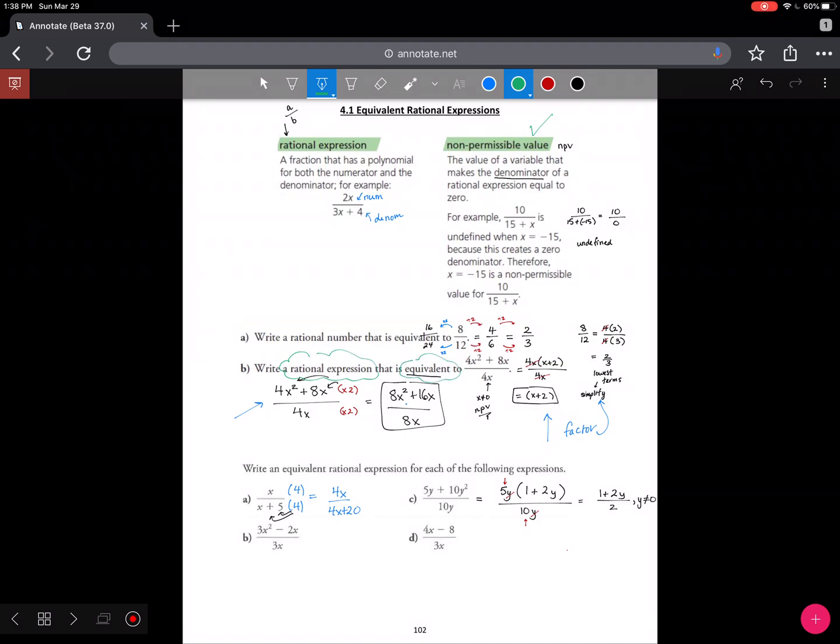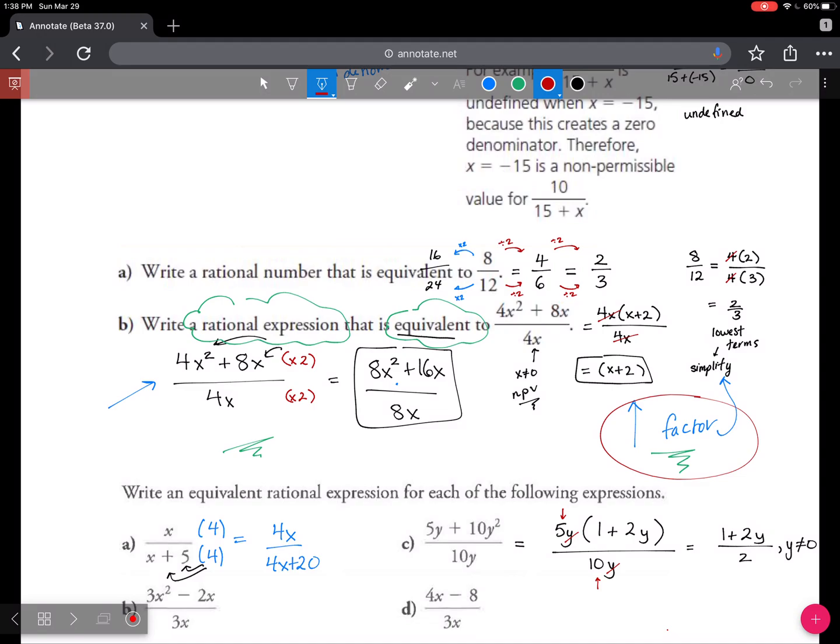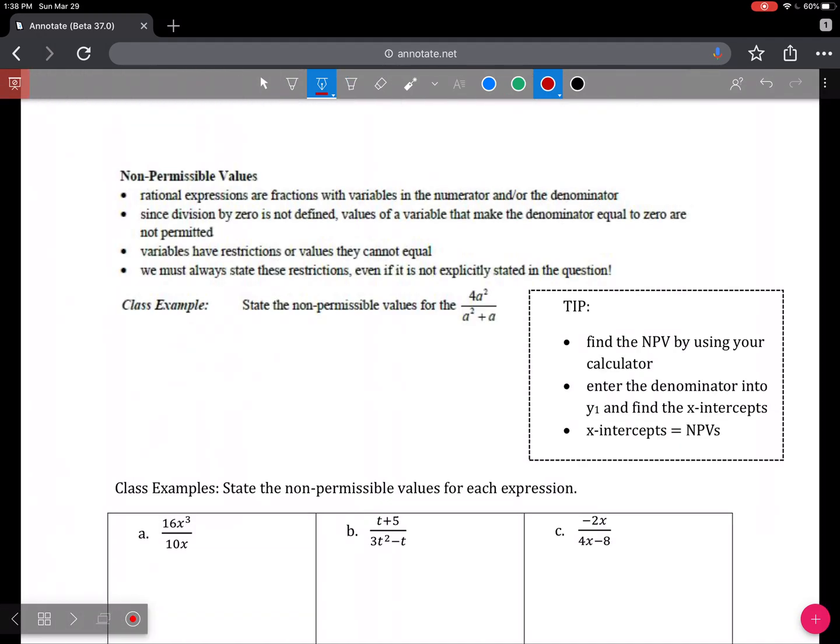Two processes where we can factor and simplify or just multiply top and bottom by the same number. As we progress through the unit, it's going to be the factoring and the simplifying that we focus on. Let's talk a little bit more about non-permissible values. Remember that division by 0 is what is not defined. We only care about what the denominator is in the sense that the denominator is not allowed to be equal to 0. That's what we need to consider - only the denominator when talking about non-permissible values.